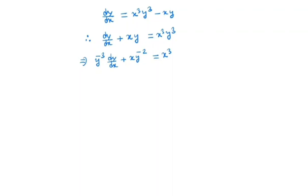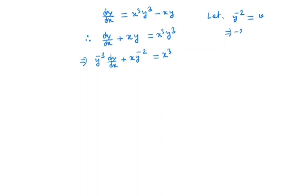In the next step, we will substitute y⁻² by a new variable v. So let v = y⁻², which gives dv/dx = minus 2y⁻³ dy/dx, so y⁻³ dy/dx equals minus one-half dv/dx.